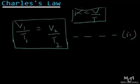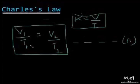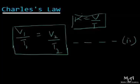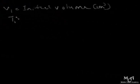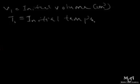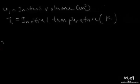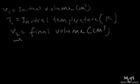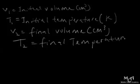The volume of a given mass of gas is directly proportional to its temperature where pressure remains constant. The formula is V1/T1 = V2/T2, where V1 is the initial volume in centimeter cubed, T1 is the initial temperature in Kelvin, V2 is the final volume in centimeter cubed, and T2 is the final temperature in Kelvin.